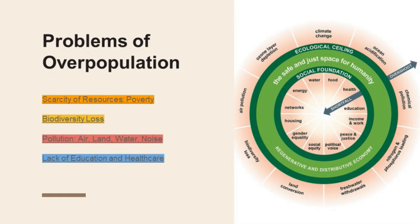Moving on to the problems of overpopulation. The problems that occur as a consequence of overpopulation include scarcity of resources. When the number of people increases at an exceedingly rapid pace, the problem of resource scarcity arises, as the number of people keeps increasing but the limited volume of resources more or less remains the same.